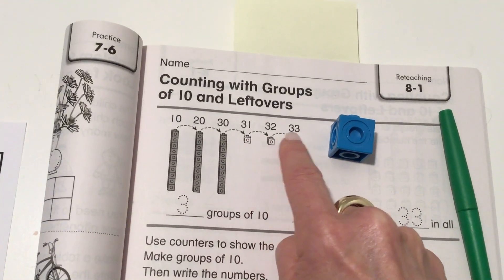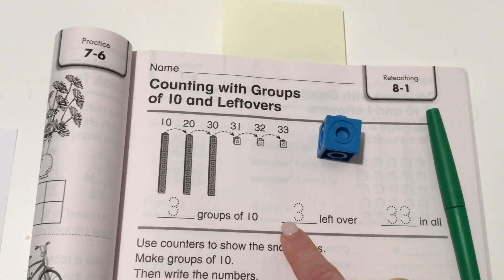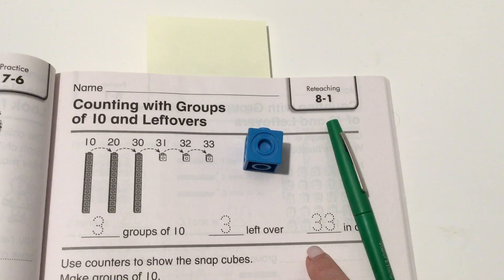31, 32, 33. So we have 3 groups of 10 with 3 left over or 3 ones and that's 33 in all.